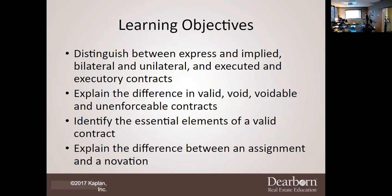We're going to first start off talking about distinguishing between express and implied, as well as bilateral and unilateral, as well as executed and executory contracts. That's our first learning objective. Then we will explain the difference between valid, void, voidable, and unenforceable contracts.